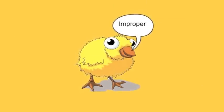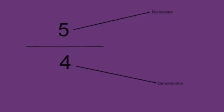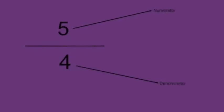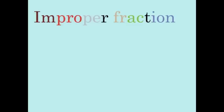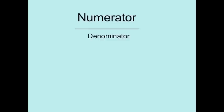The top number's larger than the one below. When the numerator's larger than the denominator, when the top number's larger than the one below, it's an improper fraction — an improper fraction. When the numerator's larger than the denominator below.